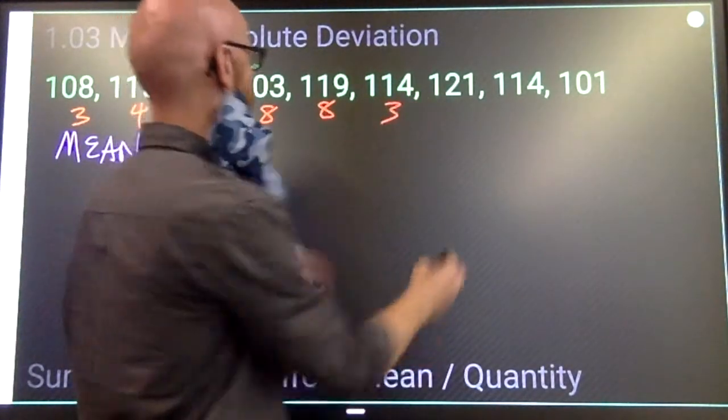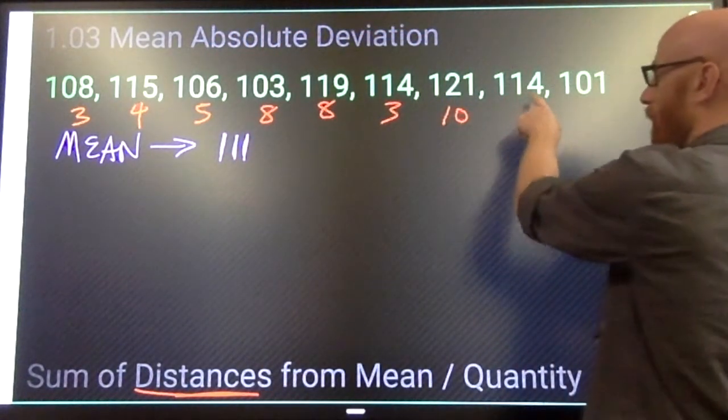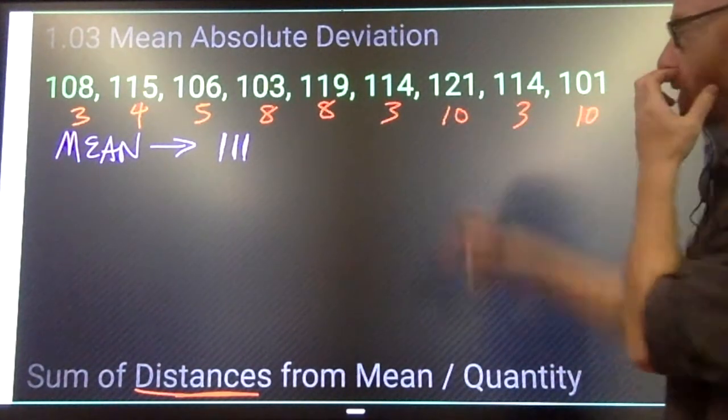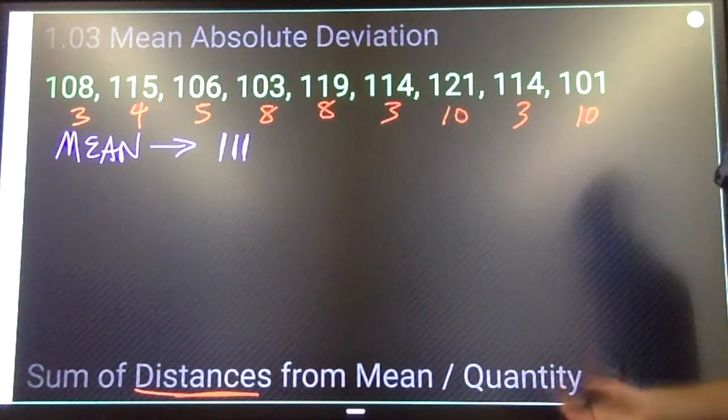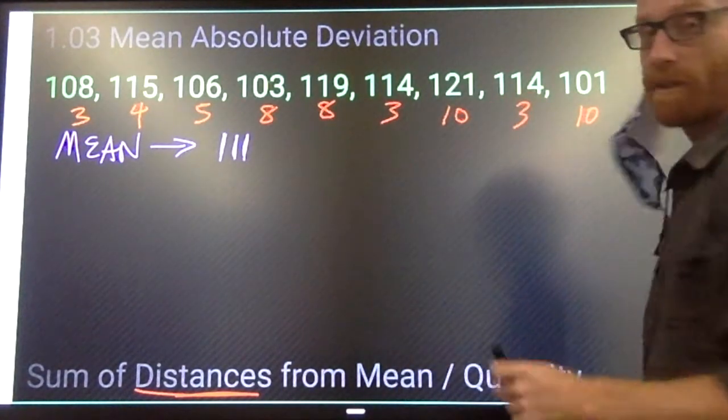The other direction, distance there is 3, distance there is 10, right, because 111 plus 10 is 121. Distance is 3 and the distance also is 10 here. Notice all my numbers are positive.